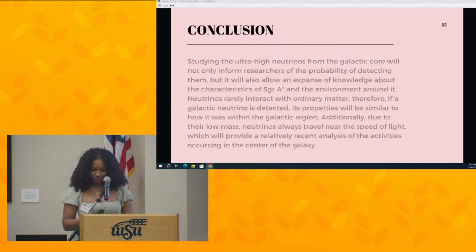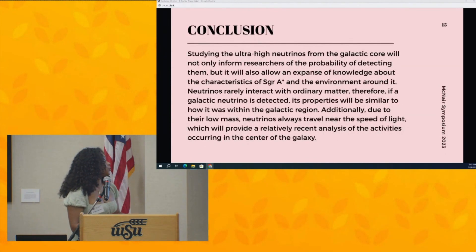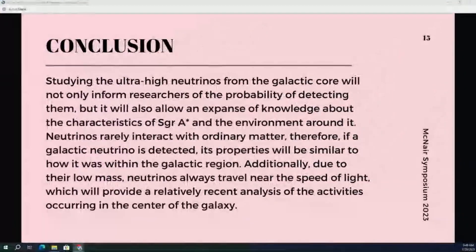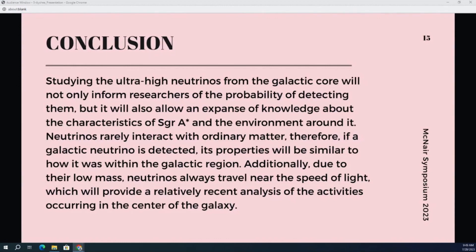In conclusion, studying the high-energy neutrinos from the galactic core will inform us of the probability of actually receiving a galactic neutrino on Earth. This will also expand our knowledge of what the environment of the galactic core is like, depending on the energies we receive. It will also provide a more recent analysis of the galactic core's environment, because neutrinos travel near the speed of light — so while not recent in human terms, it will be relatively recent in space terms. Thank you.